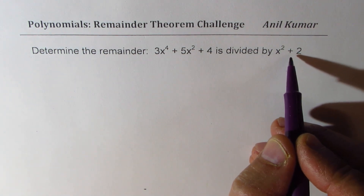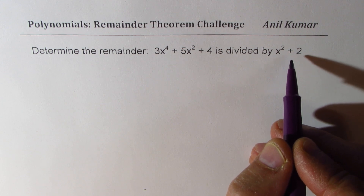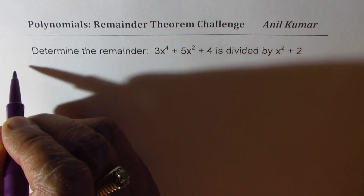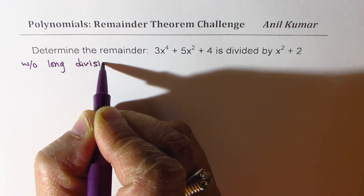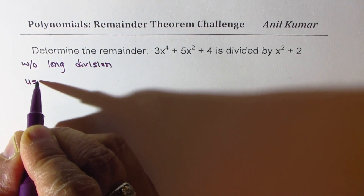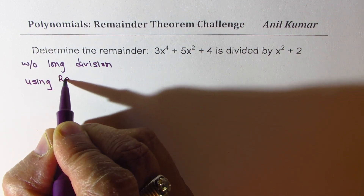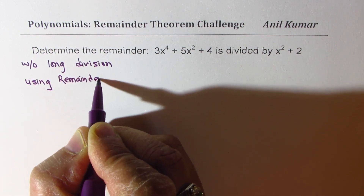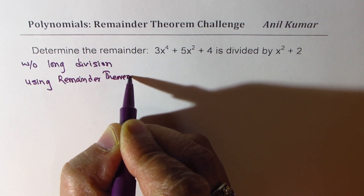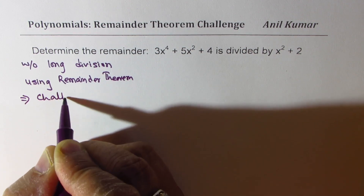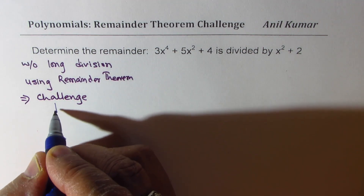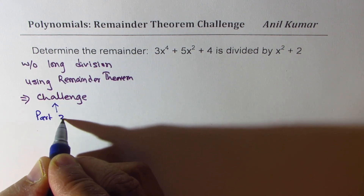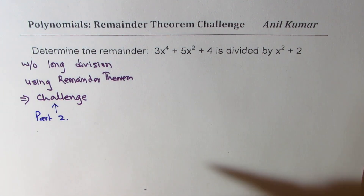Now, x squared plus 2 cannot be factored in the domain of real numbers. So the question really is to do this without long division, using the remainder theorem. Now that is the challenging part. So I will do it in two parts — first using long division, and then the remainder theorem approach in the later half.